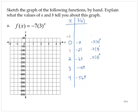If x was negative 1, we would have negative 7 times 3 to the negative first, which is negative 7 times 1 third, which is negative 7 thirds.